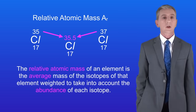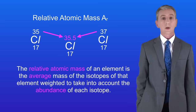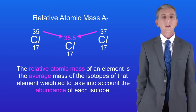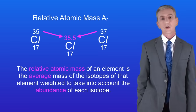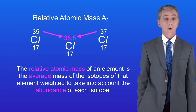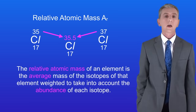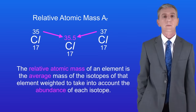If you look on the periodic table you can see that the mass number of chlorine is actually 35.5. This is the average of 35 and 37 but it's weighted for the abundance of each isotope. Chlorine-35 is more abundant than chlorine-37.